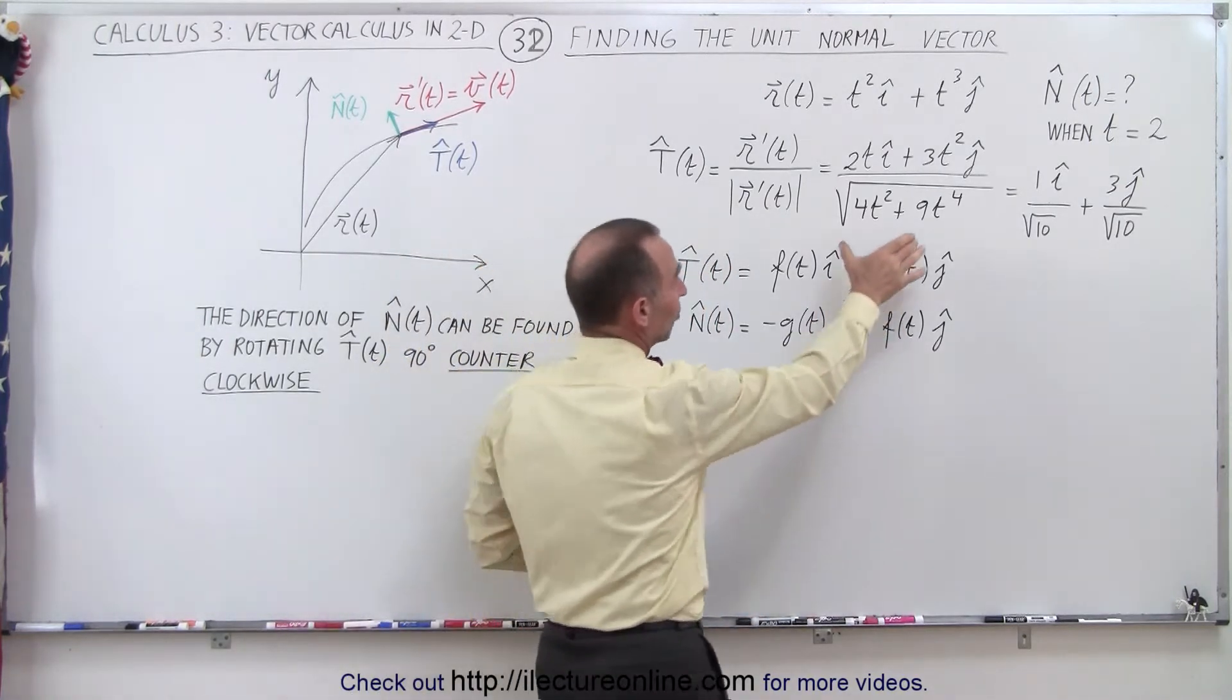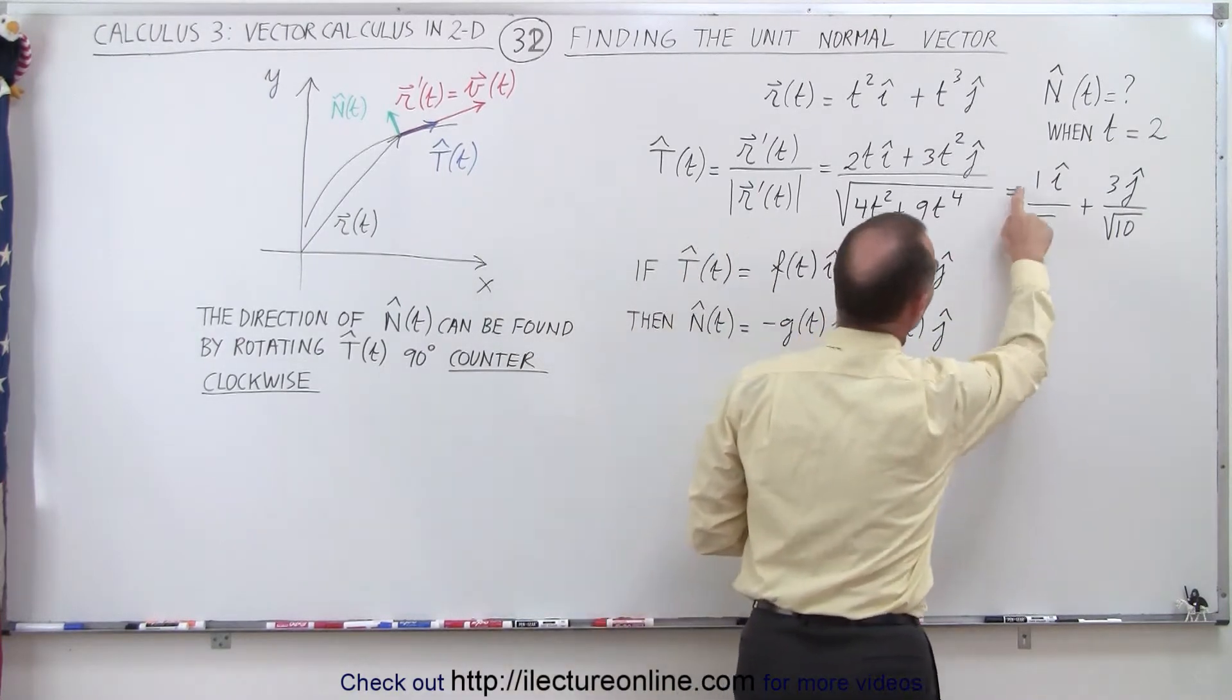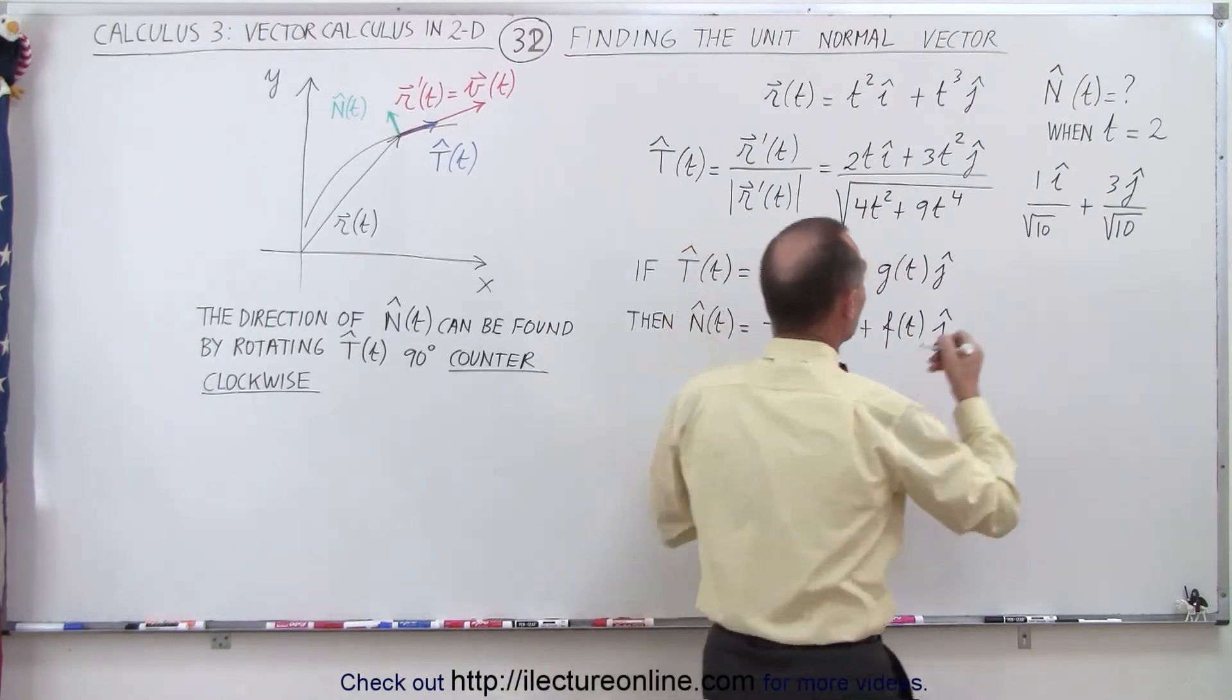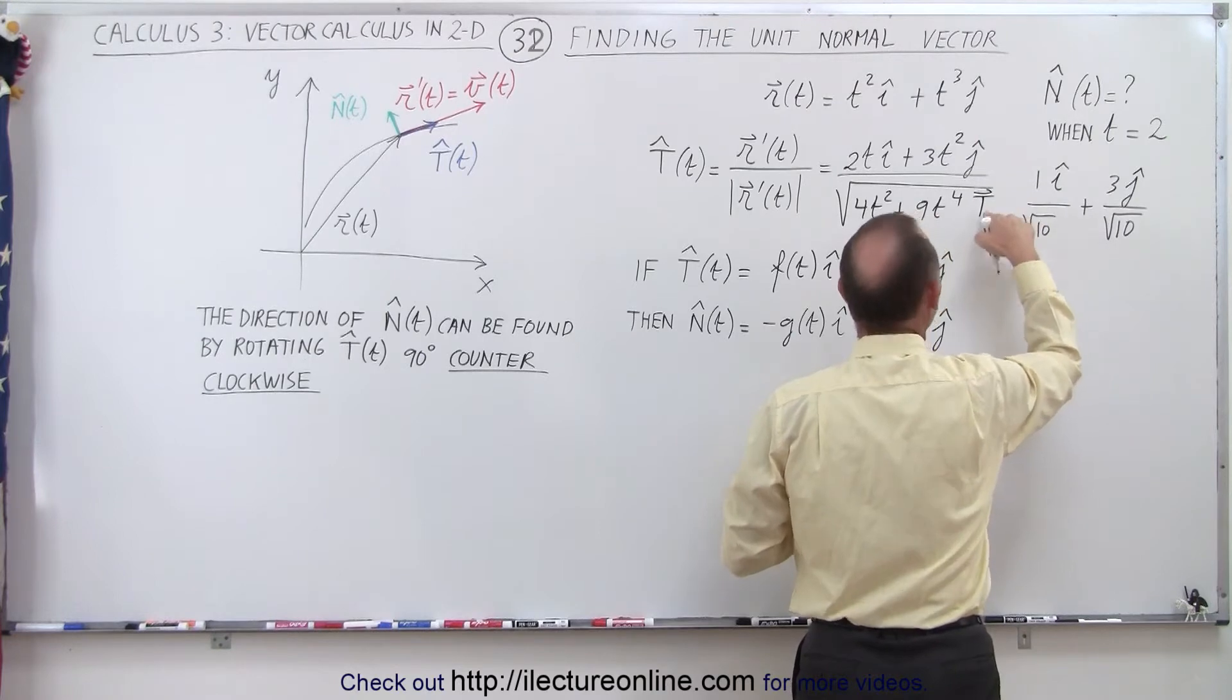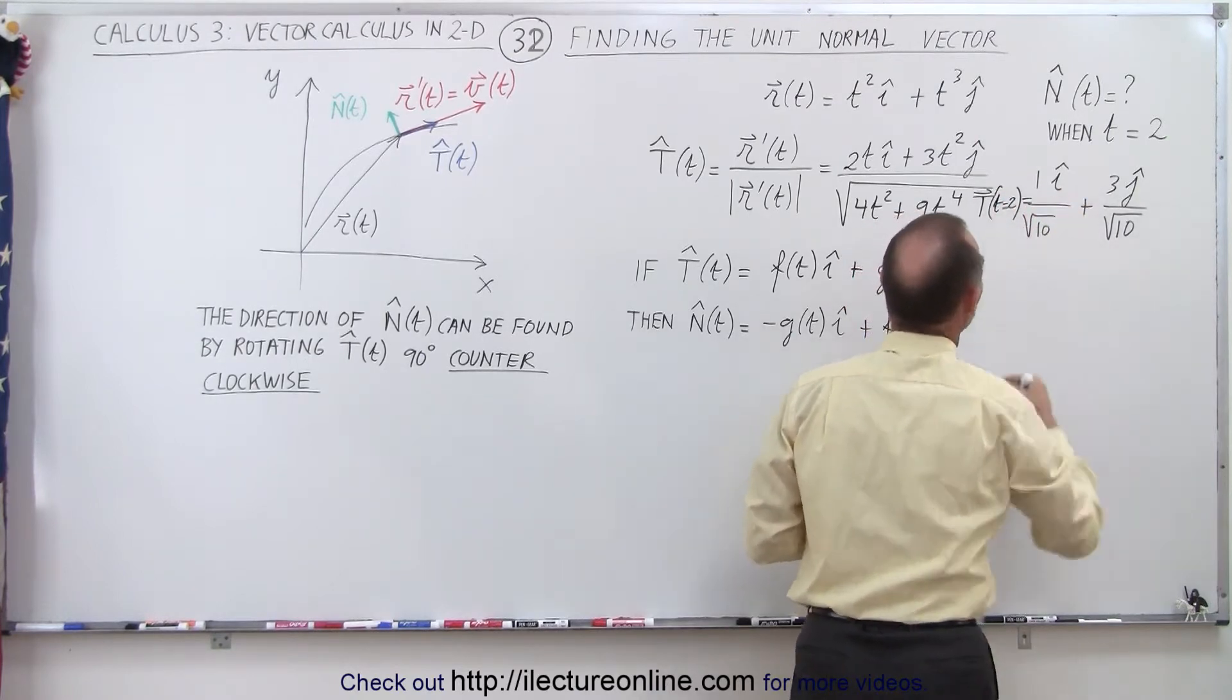For our convenience, we've taken the general solution here. Actually, I shouldn't write an equal sign there because that's not really equal. The unit tangent vector when t equals 2 is equal to that.